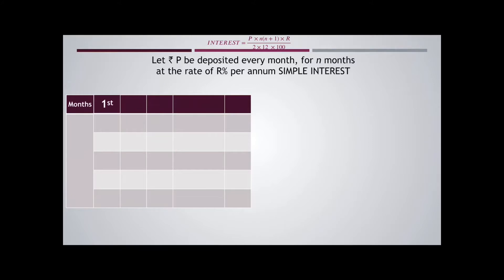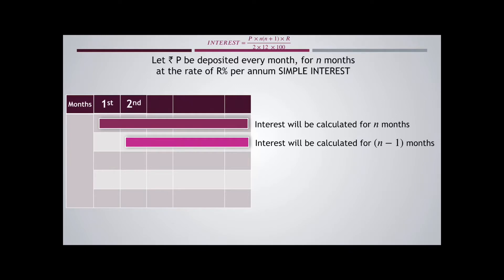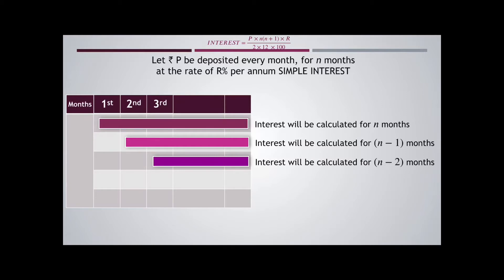The money deposited in the first month remains in the account for N months, so interest will be calculated for N months. In the second month, the money deposited will remain in the account for 1 month less, so interest will be calculated for N-1 months. For the third month, interest will be calculated for N-2 months, and it goes on similarly for the entire time period.